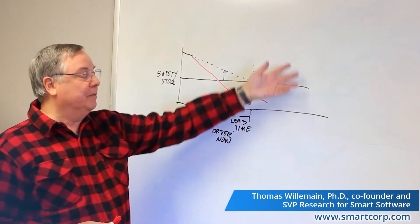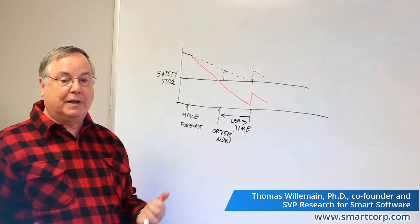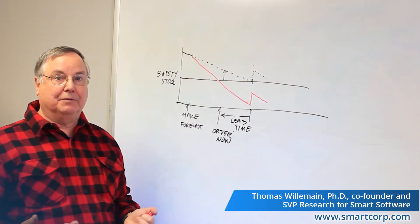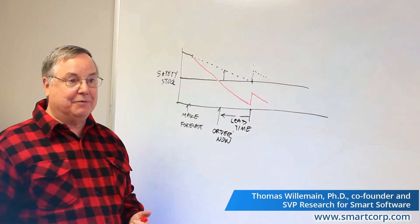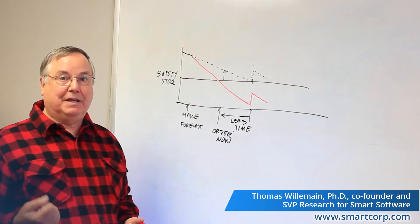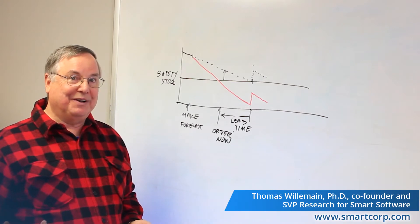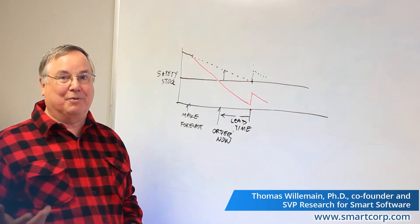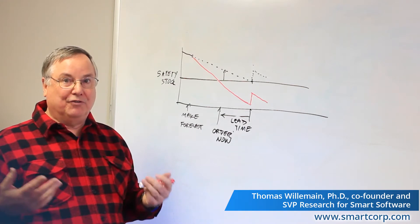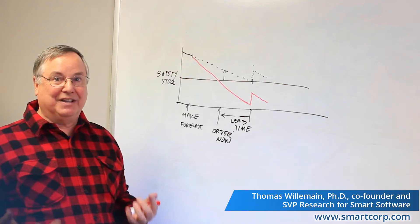So you can see that demand forecast accuracy is critical to making sure we avoid stock outs. And as adults you realize that it's not possible to always anticipate future demand perfectly, so there's always a chance of stock outs, but the safety stock minimizes that chance.